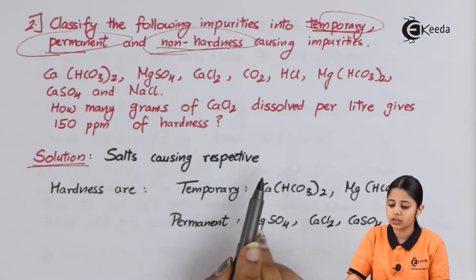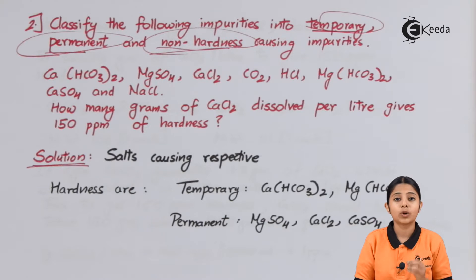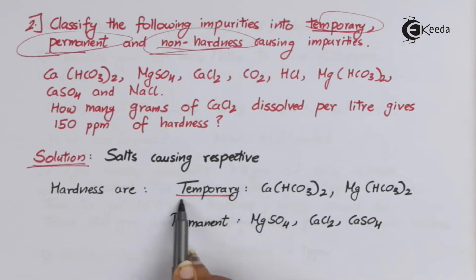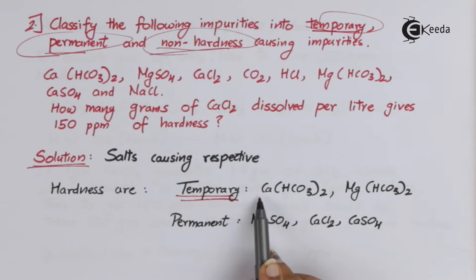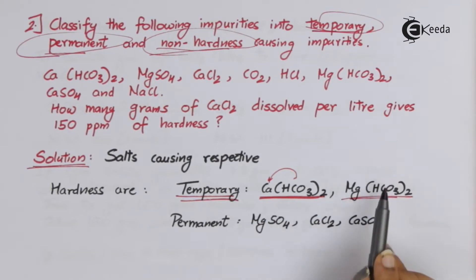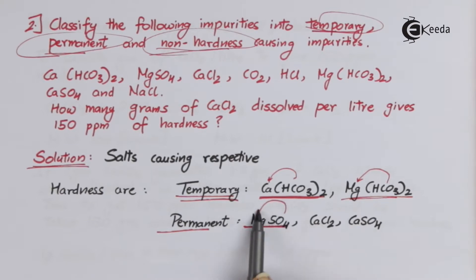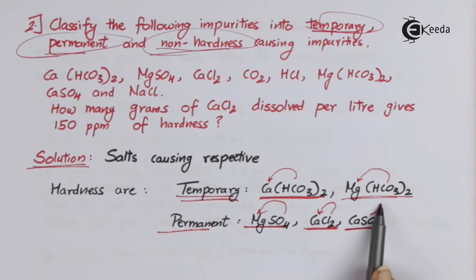In the solution, we first classify the salts causing the respective hardness. For temporary hardness, we consider only the carbonates and bicarbonates of calcium and magnesium: Ca(HCO₃)₂ is a bicarbonate of calcium, and Mg(HCO₃)₂ is a bicarbonate of magnesium — both cause temporary hardness. For permanent hardness, we have MgSO₄ (sulfate of magnesium), CaCl₂ (chloride of calcium), and CaSO₄ (sulfate of calcium).